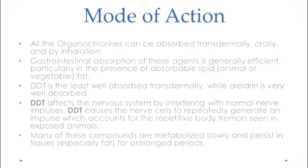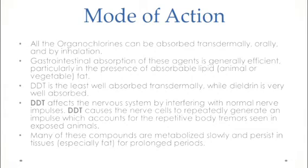DDT affects the nervous system by interfering with normal nerve impulses. It causes nerve cells to repeatedly generate impulses, which leads to tremors in animals or in humans exposed to DDT. So DDT mainly affects our nervous system, creating repeated impulses that result in tremors.